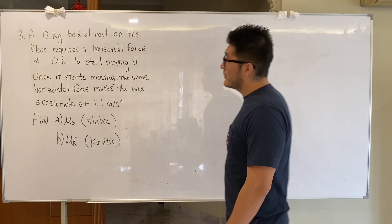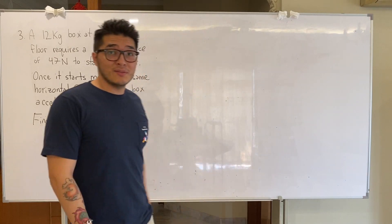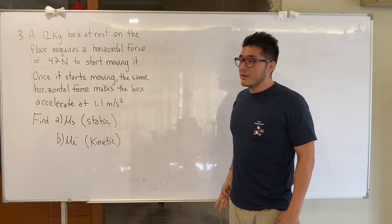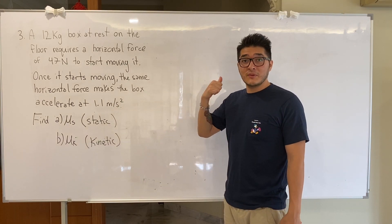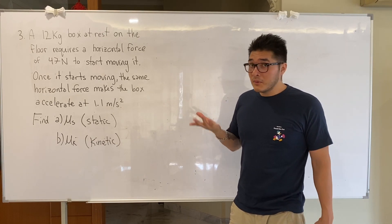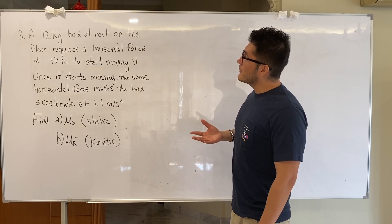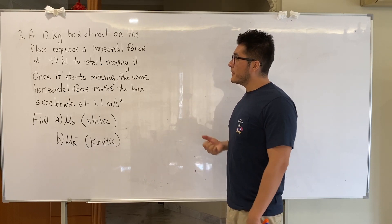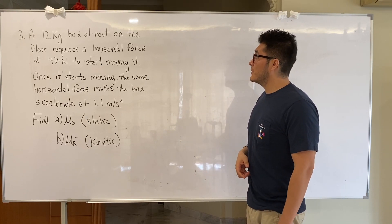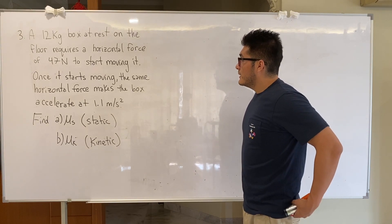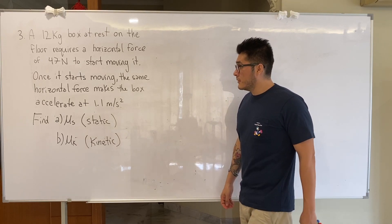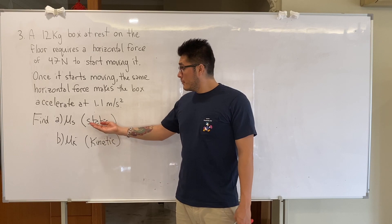Welcome back to physics. Today we're doing question number three. We covered one and two, which were about pushing a box. A 12-kilogram box at rest on the floor requires a horizontal force of 47 newtons to start moving it. Once it starts moving, the same horizontal force makes the box accelerate at 1.1 meters per second squared.